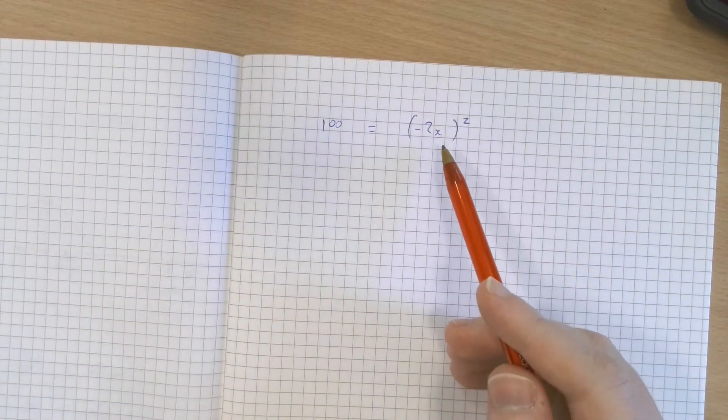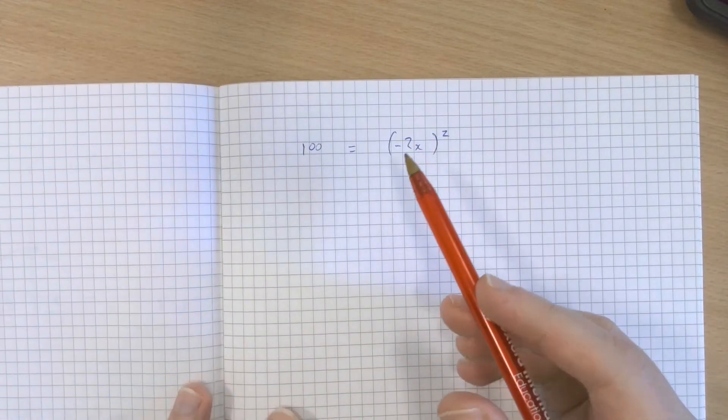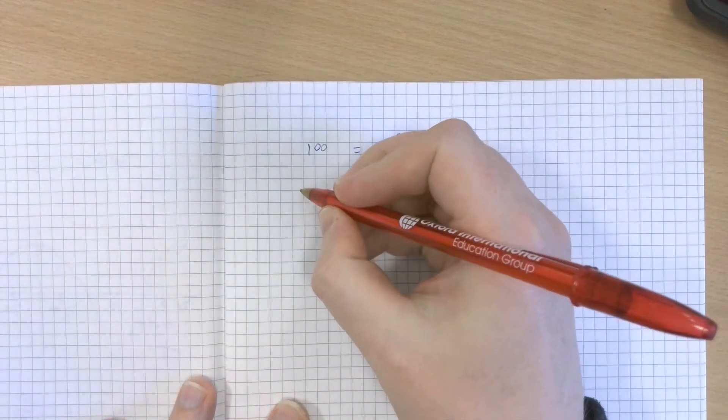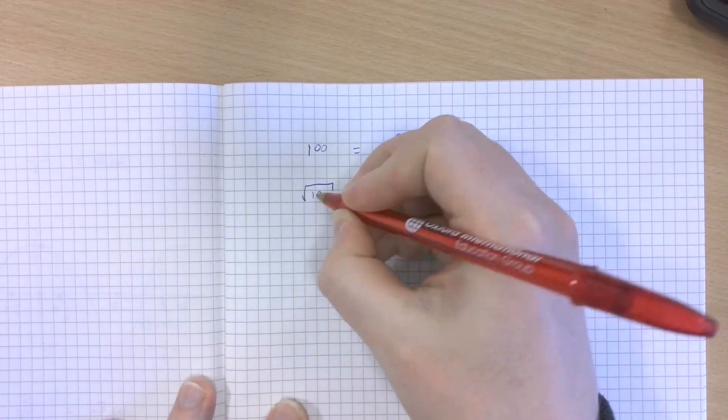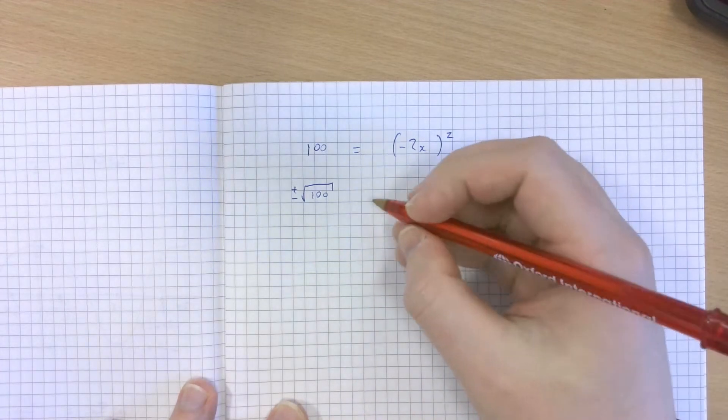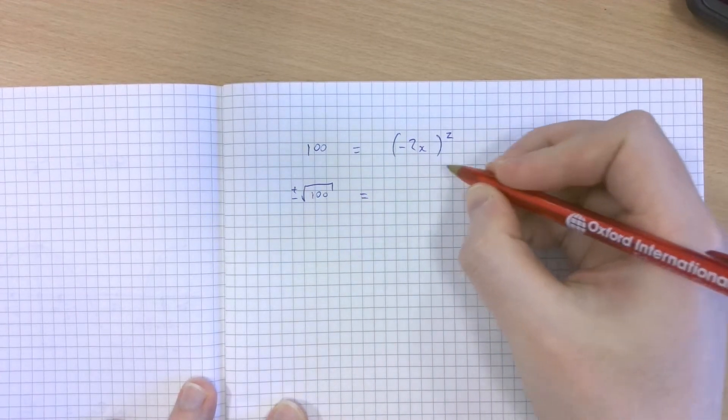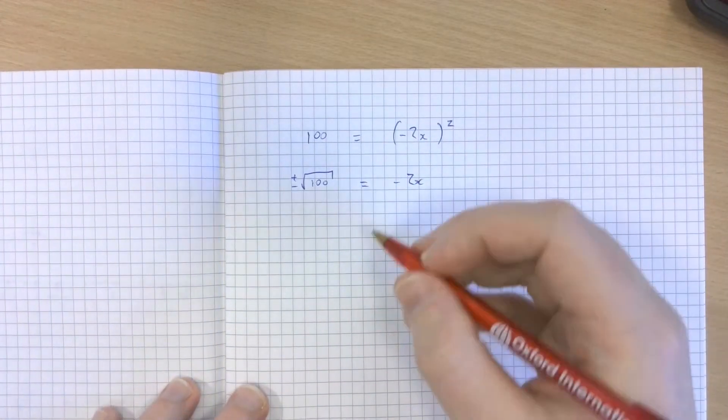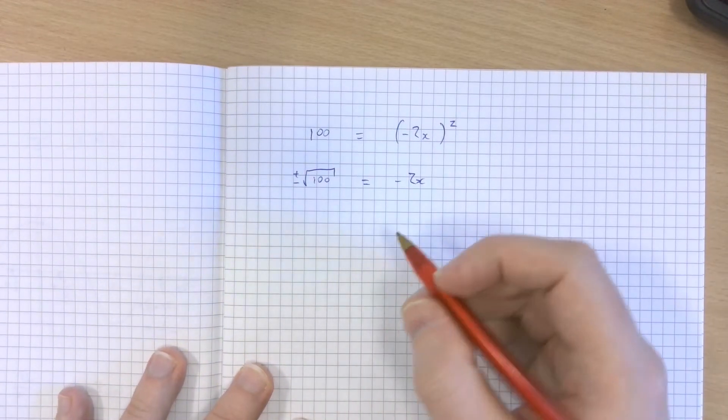To get x on its own, the first stage I'm going to do is square root both sides. So the square root of 100—obviously that's 10 but actually there are two roots, one positive and the other negative. And the square root of negative 2x squared is obviously negative 2x.